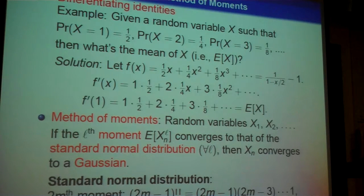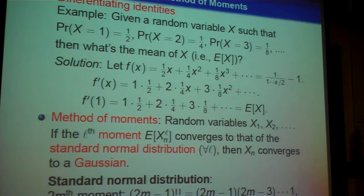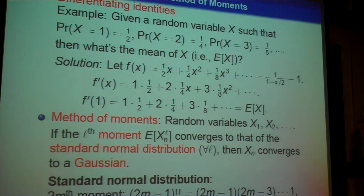To prove Gaussian behavior via generating functions, we calculate all moments and show they converge to the moments of a normal distribution. Recall: for a geometric random variable where P(X=1)=1/2, P(X=2)=1/4, P(X=3)=1/8, the mean is computed as the sum of k times the probability — done by differentiating identities and using geometric series. This leads to the method of moments: if you can calculate the moments of your distribution, you can prove convergence to Gaussian. The moments of the standard normal have a beautiful combinatorial meaning: they equal (2m-1)!! — the number of ways to pair 2m people into groups of two.